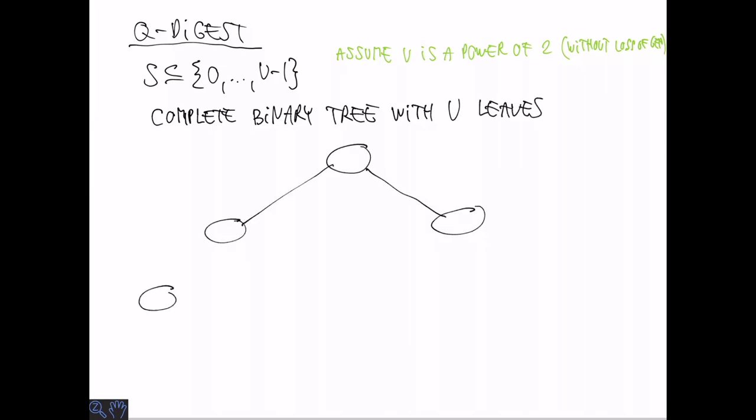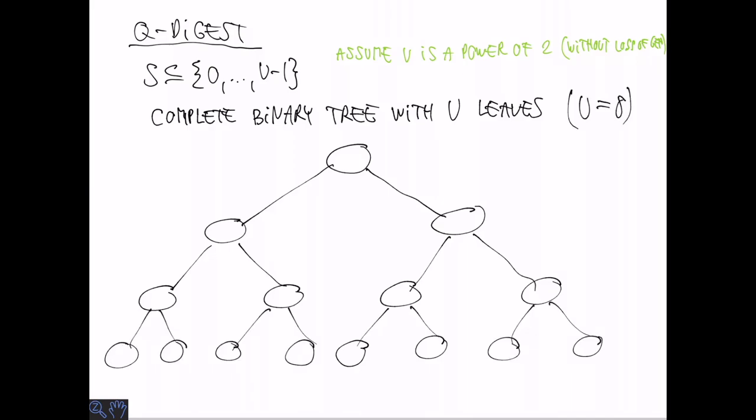Now, to describe the data structure, it is instructive to imagine a complete binary tree with U leaves. So this is not actually going to be stored, but this is just a conceptual thing. So here it is for U equal to 8. So the idea is to store in some of the nodes in this complete binary tree counts of elements that appear in that subtree. So the leaves, of course, correspond to all the possible elements of the set.